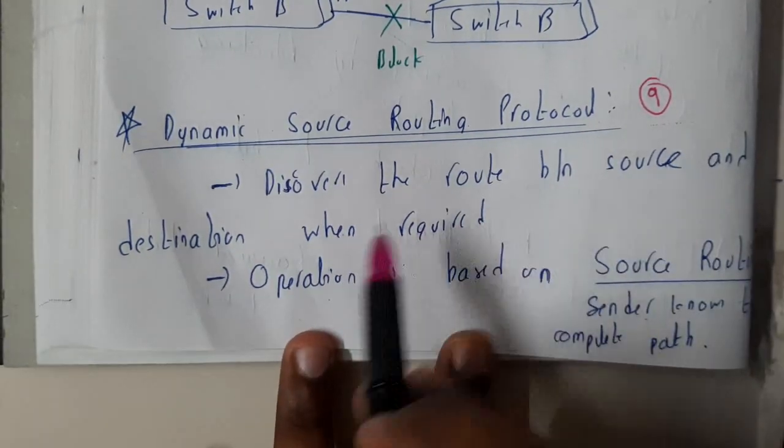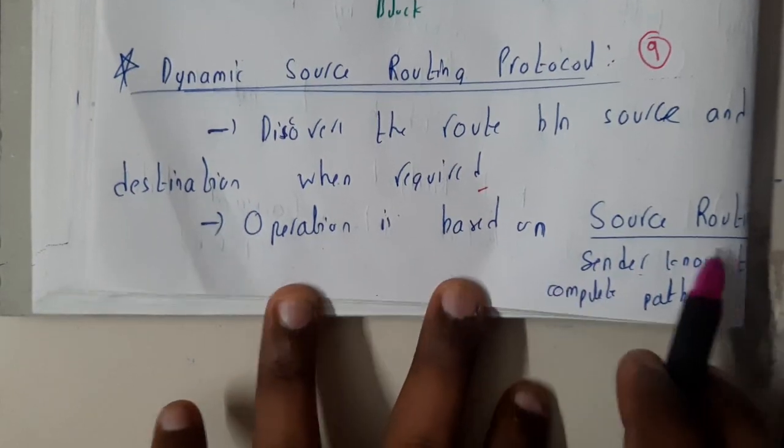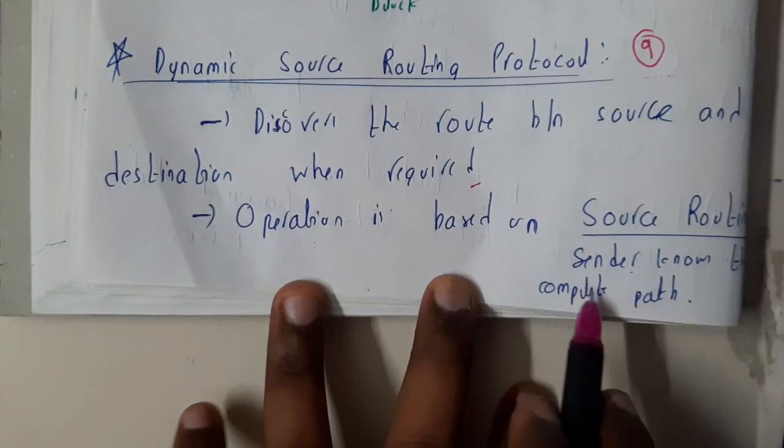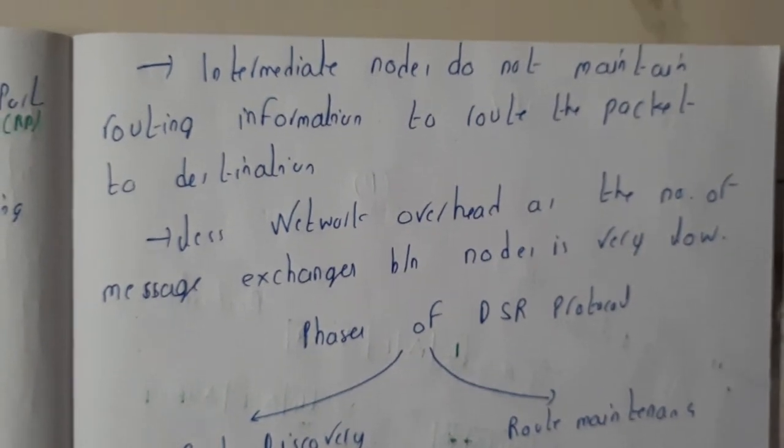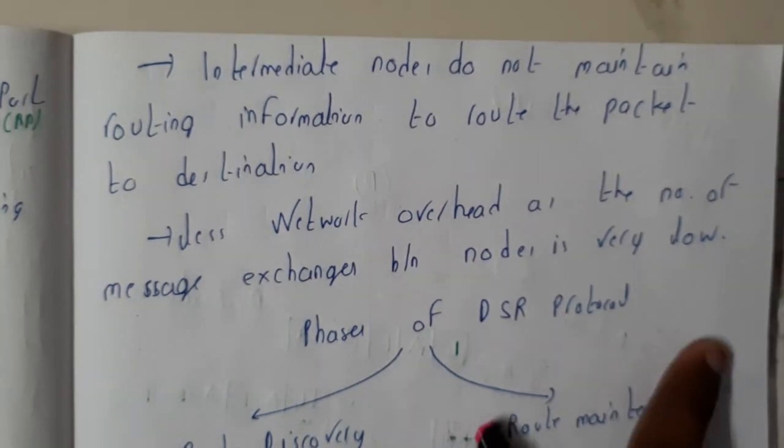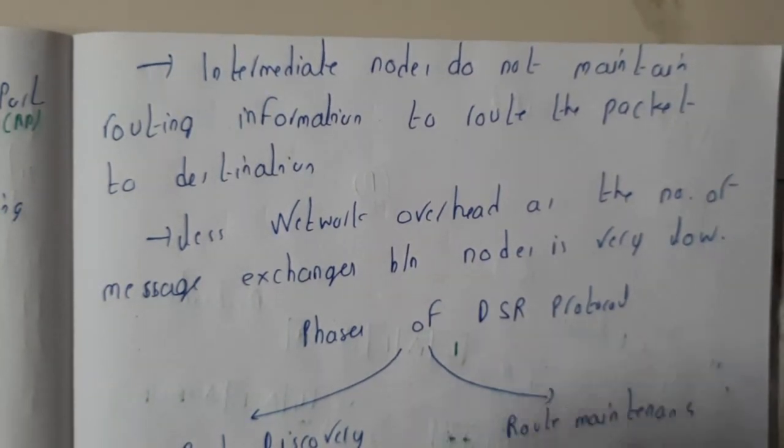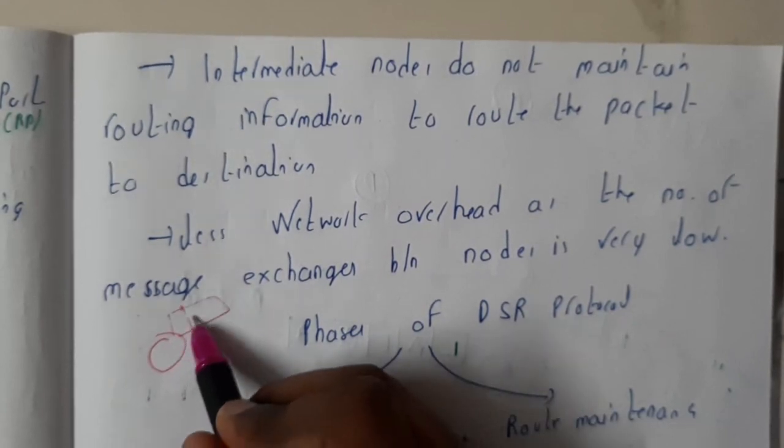So discovering the route between the source and destination whenever required. Operation is based on source routing, which is nothing but the sender to the receiver. The complete path we will be calling it as source routing. Here, immediate nodes do not maintain routing information to route the packet to the destination. Initially, you will be maintaining the initial state and the final state with the variable.